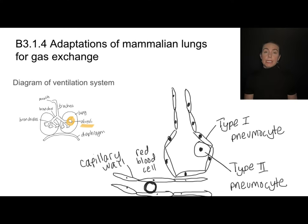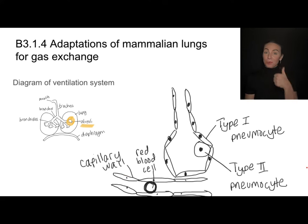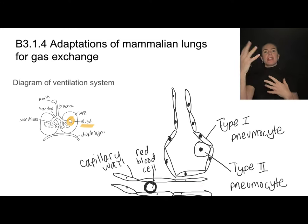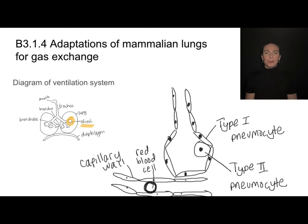The alveoli are surrounded by a very dense network of capillaries. These capillary walls are made of thin, flat cells, just like the type 1 pneumocytes — great for diffusion. Red blood cells travel through these capillaries, picking up oxygen and getting rid of carbon dioxide. All of that is driven by diffusion, so these adaptations — thin, flat, moist, high surface area to volume ratio — are all geared towards that diffusion process.